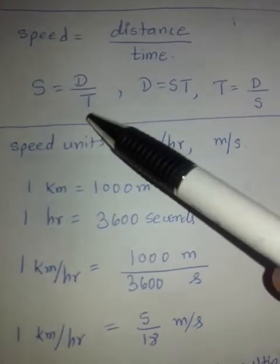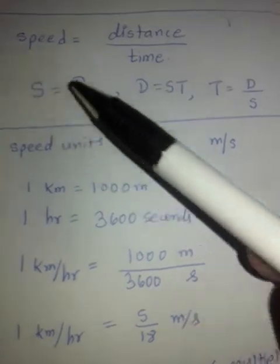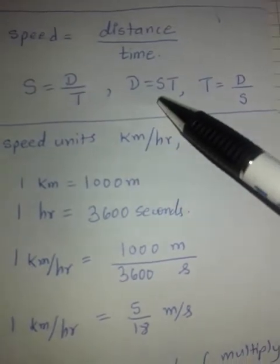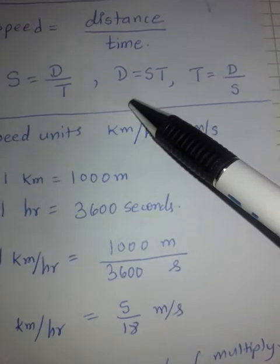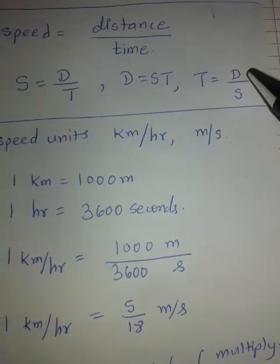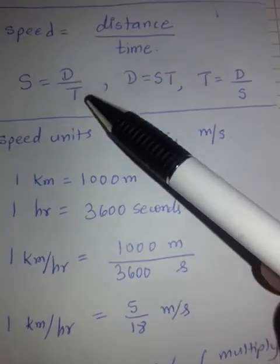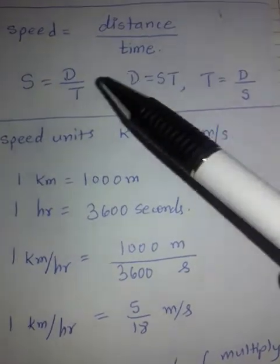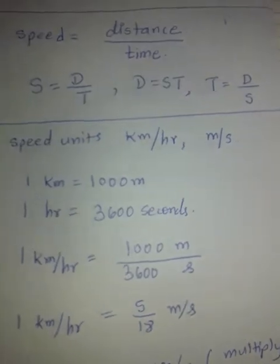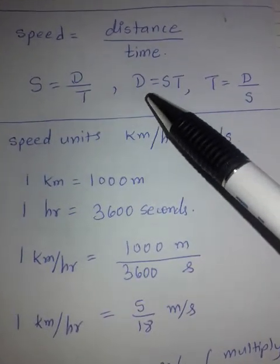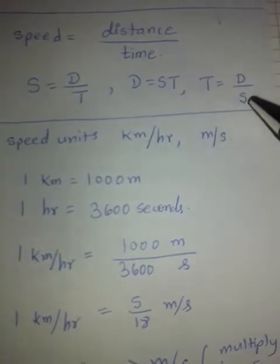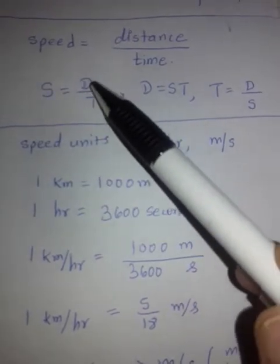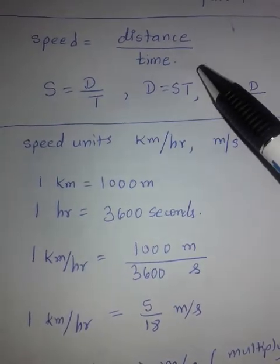From S = D/T, if T moves to the other side it becomes Distance = S × T. And if S moves to the denominator, T = D/S. These three are not different formulae — they are one and the same. You don't need to memorize all three separately. Just remember S = D/T, that is, Speed equals Distance upon Time.